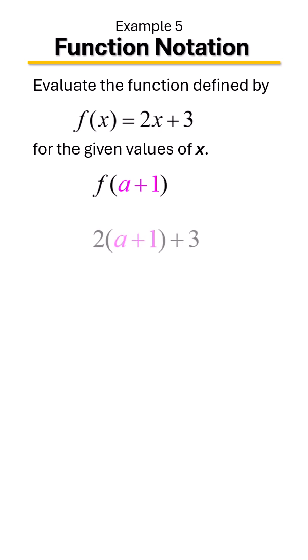So when we do so, it's going to look like so. Now because we have a binomial here with a term on the outside, we're going to have to use distributive property. Two times a and then two times one. Let's go ahead and do the distributive property.